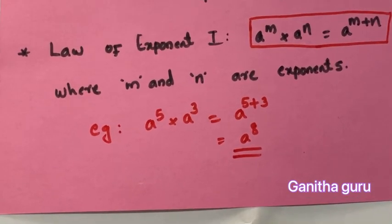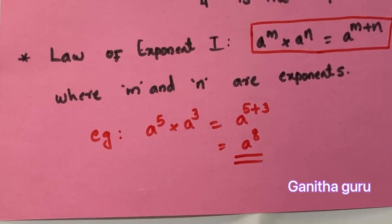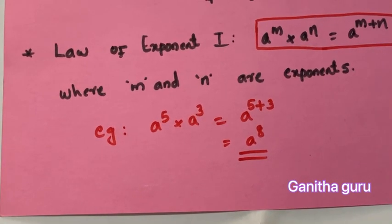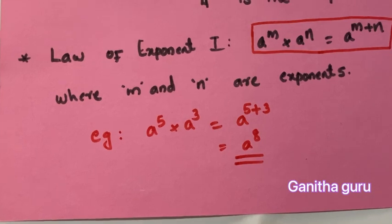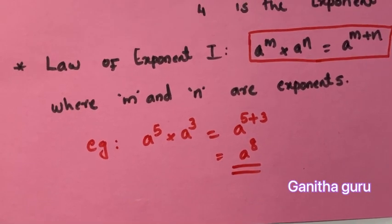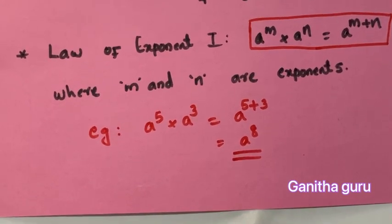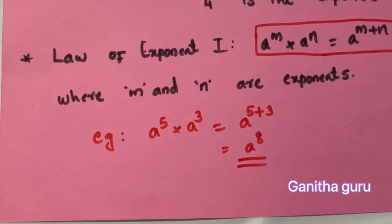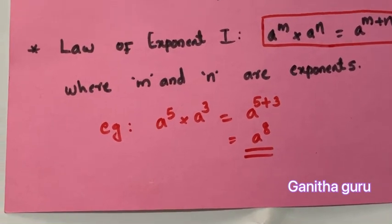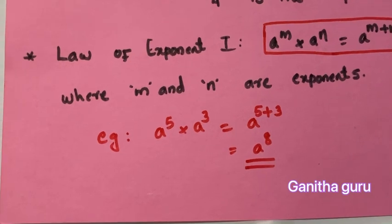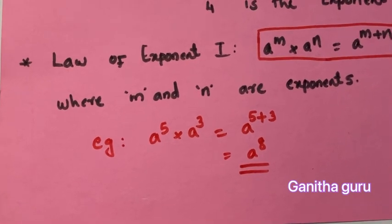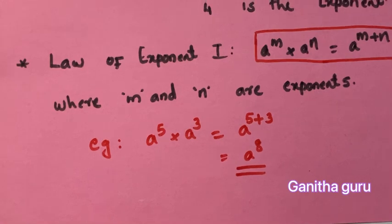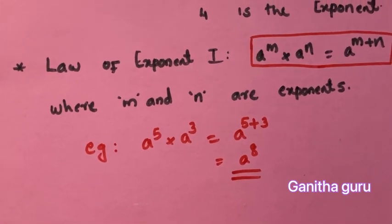The first law: a raised to m, multiplied by a raised to n, is equal to a raised to m plus n. In this equation, the bases should be equal. For example, a raised to 5 into a raised to 3 equals a raised to 8.